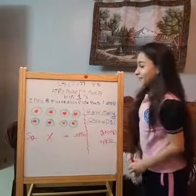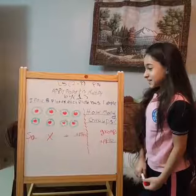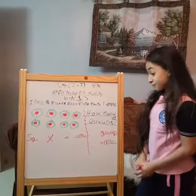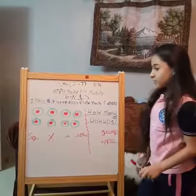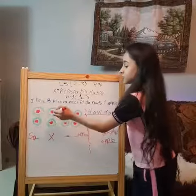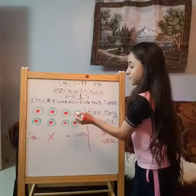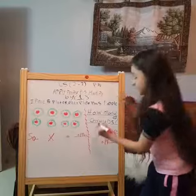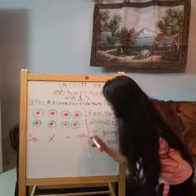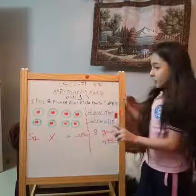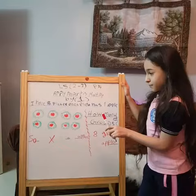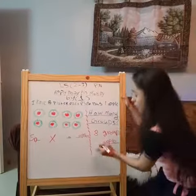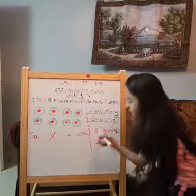Look here, I have eight plates. Each plate has one apple. How many groups do I have? One, two, three, four, five, six, seven, eight. Eight groups. How many apples in each plate do I have? One. So, one apple.